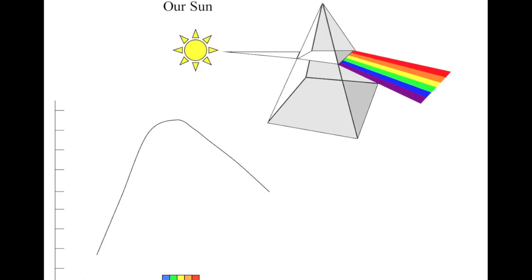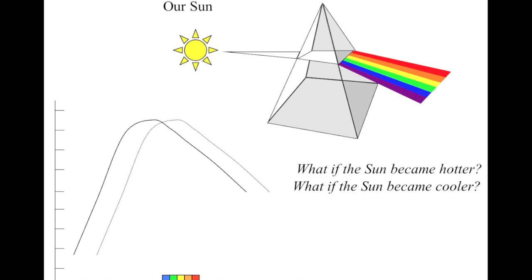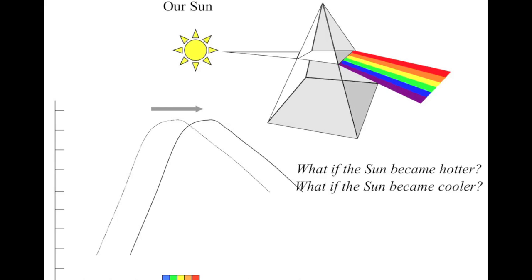So what if our sun had different temperatures? What if the sun was hotter at its surface? In that case, the wavelength of the peak would be at a shorter wavelength, and so it would have to go to the left. What if the sun was cooler in temperature? In that case, the wavelength of the peak would be longer, and so the peak would be above somewhere on the right part of the x-axis.